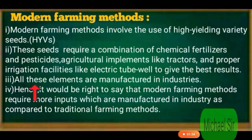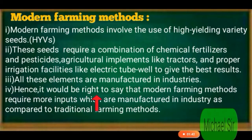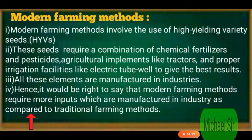Third: All these elements are manufactured in industries — यह सभी elements industries में बनाये जाते हैं। Fourth: Hence, it would be right to say that modern farming methods require more inputs which are manufactured in industry as compared to traditional farming methods.